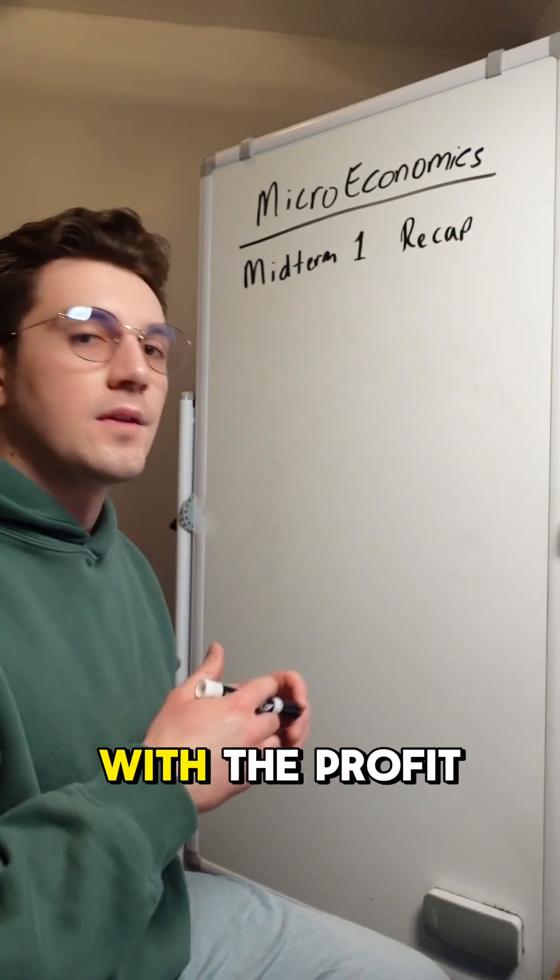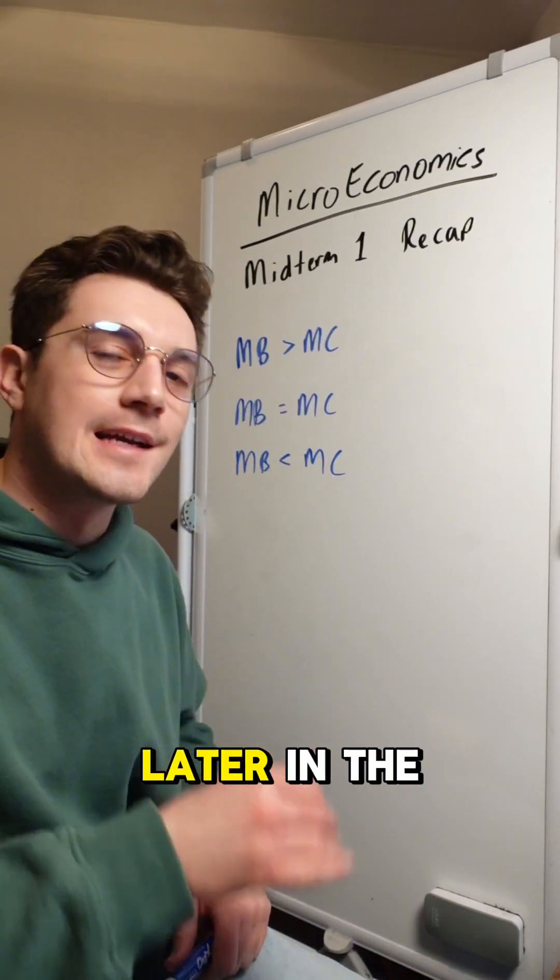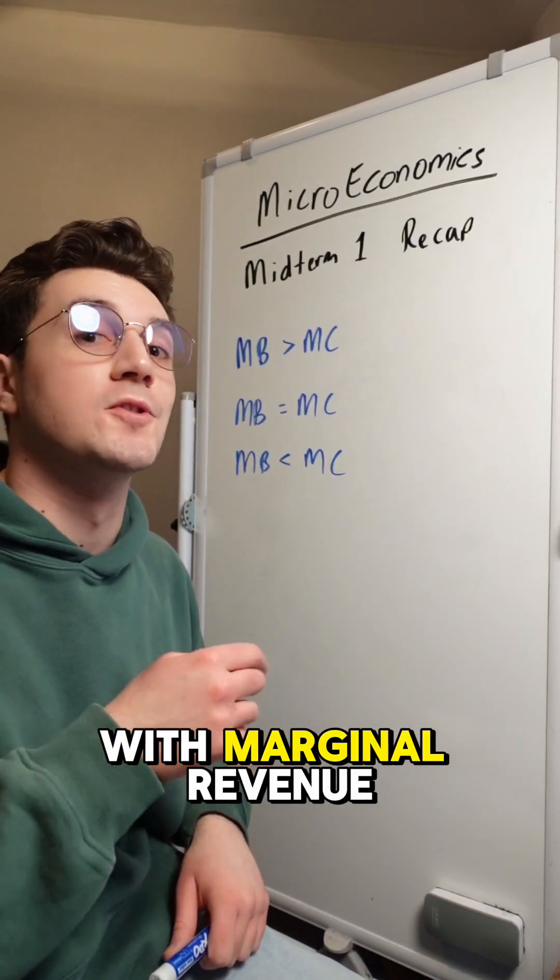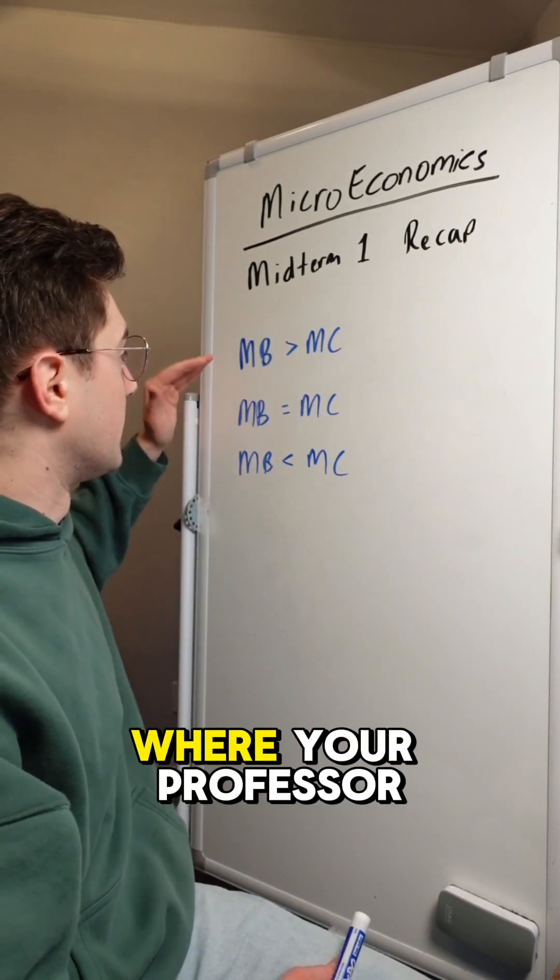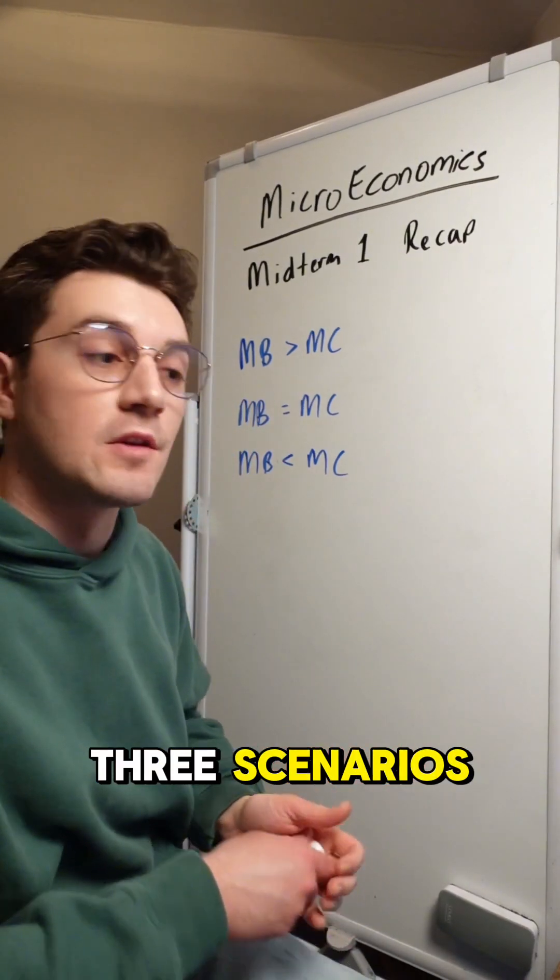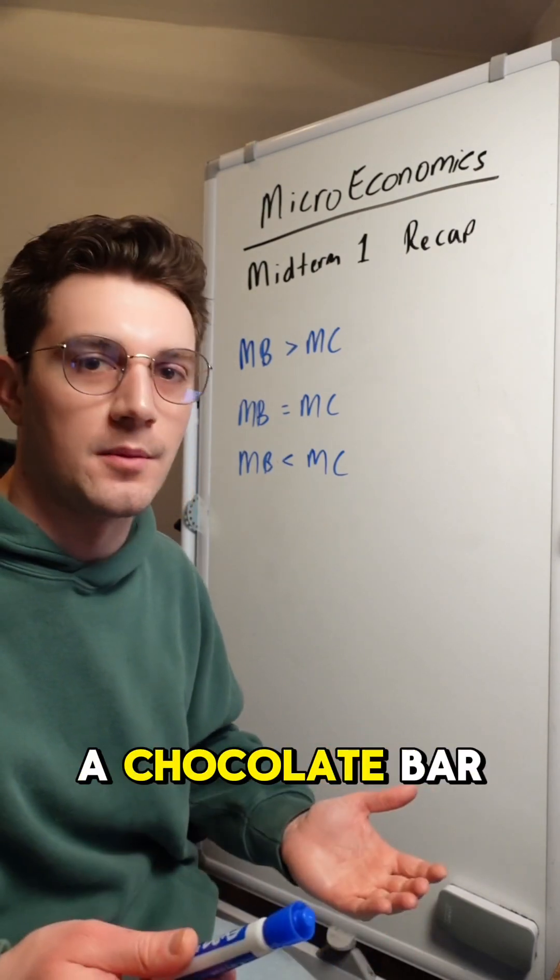Let's start with the profit maximizing point with marginal analysis. This is going to apply again later in the semester when we're working with marginal revenue and marginal cost. This probably looks familiar where your professor mapped out these three scenarios and whether or not you should consume an additional unit. Typically it's like a pizza or a chocolate bar.